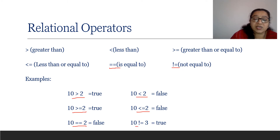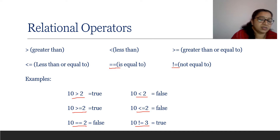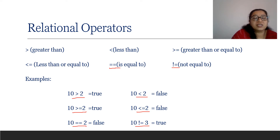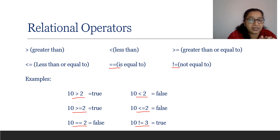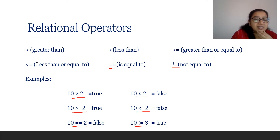10 not equal to 3 — 10 is not equal to 3, so we get a true answer. This is the way of comparison using relational operators. These are the relational operators in C++.